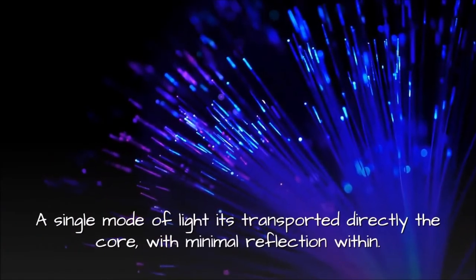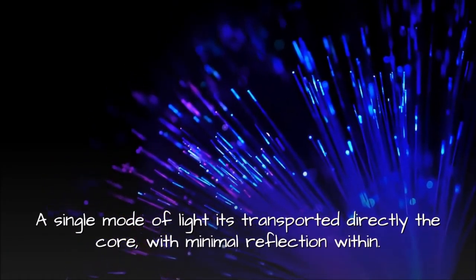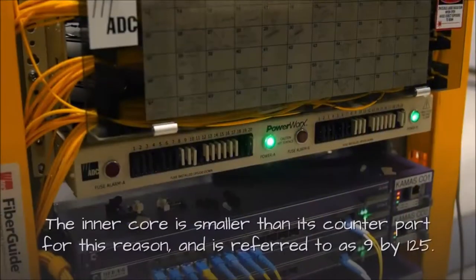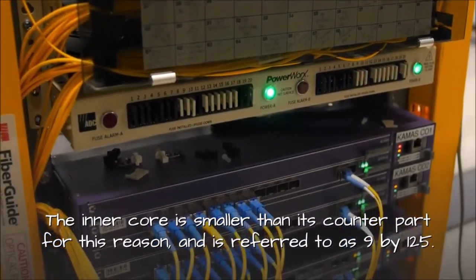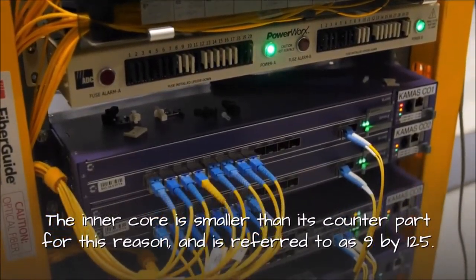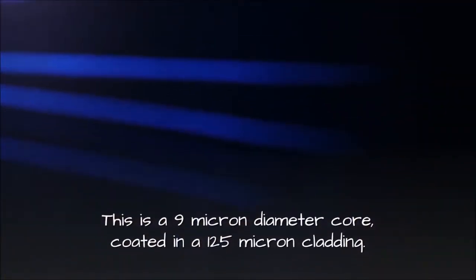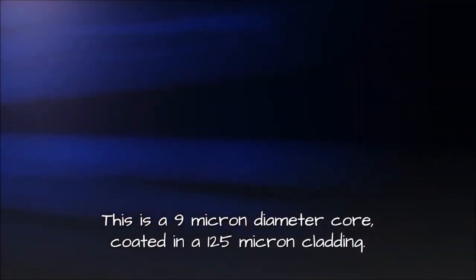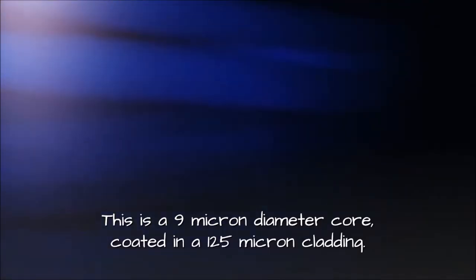A single mode of light is transported directly through the core with minimal reflection within. The inner core is smaller than its counterpart for this reason and is referred to as 9x125. This is a 9 micron diameter core coated in a 125 micron cladding.